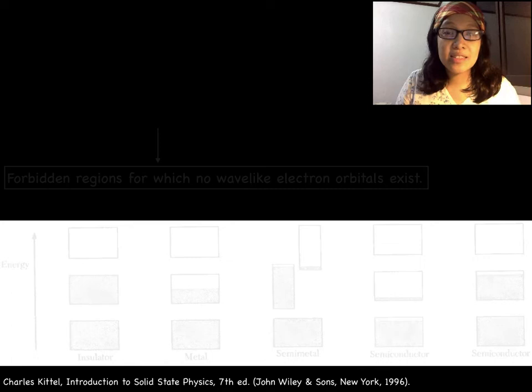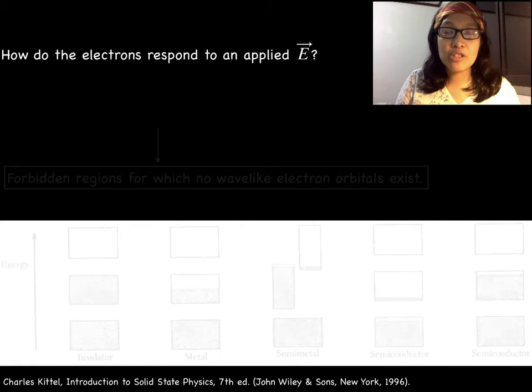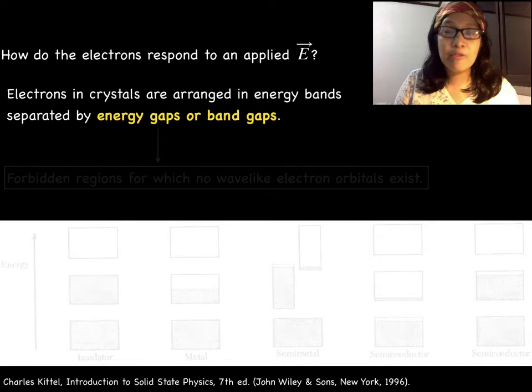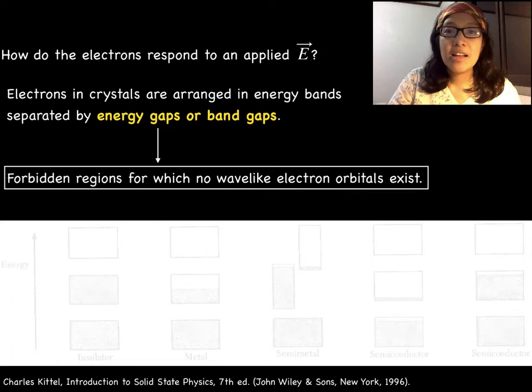That's the widest of any common physical property of solids. Now, solids are composed of electrons. We shall see that the electrons are arranged in energy bands separated by regions in energy for which no wave-like electron orbitals exist. Such forbidden regions are called energy gaps or band gaps.